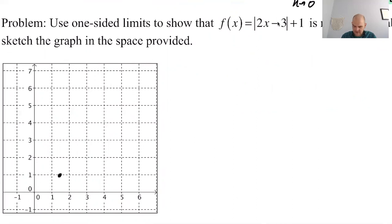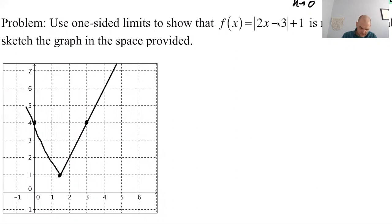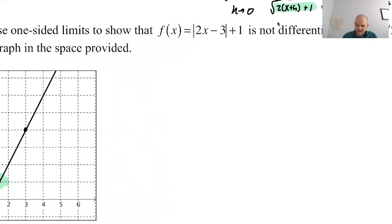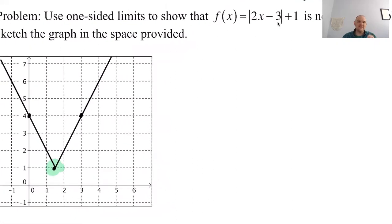If x is equal to 0, I get the absolute value of negative 3 which is 3 plus 1 is 4. If x is equal to 3, I should also get 4 because of the same distance. This is our graph. You can visually see that the derivative is not going to exist, because anytime a function has a really sharp corner or sharp turn, the derivative just isn't going to exist — there's no slope there. It's a point — if this was a roller coaster, that would be your doom.